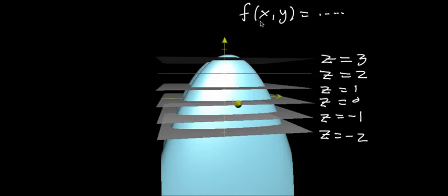So because we always represent the output of the function as the height off of the x, y plane, these represent constant values for the output.